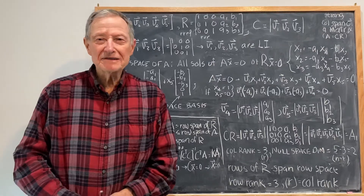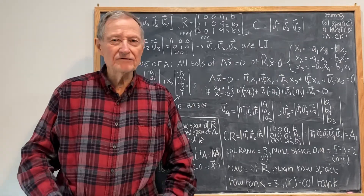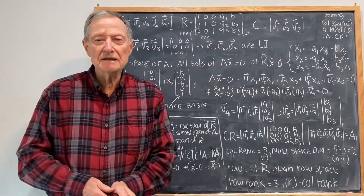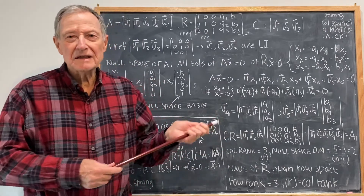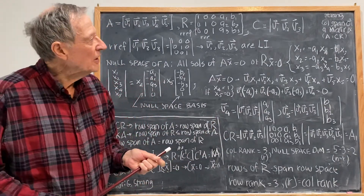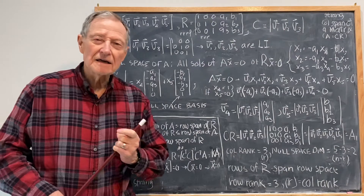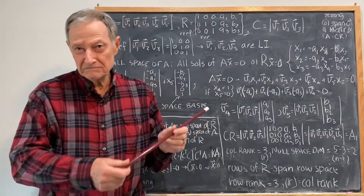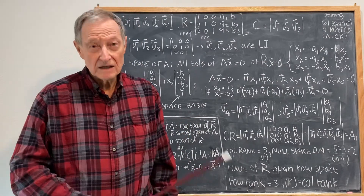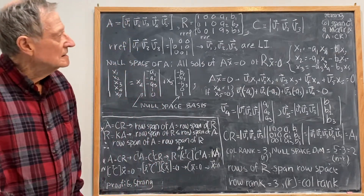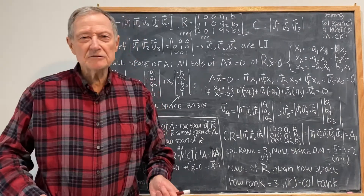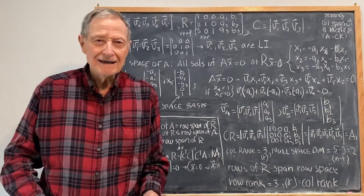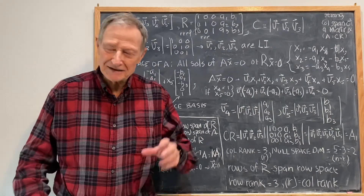Today I would like to discuss the matrix factorization A equals CR, which I came across in Gilbert Strang's latest linear algebra series, part one. I found it fascinating, so I decided to dissect it, and the result is this video. I might add that I found the linear algebra videos of Kahn and Strang to be absolutely invaluable and very, very clear.